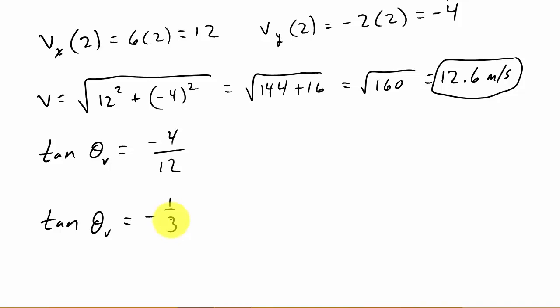Alright. Now we need to get the angle. So if we plot this, okay, there's v sub x, there's v sub y. So if we plot 12 negative 4, 12 negative 4, we can see that we're here in the fourth quadrant.